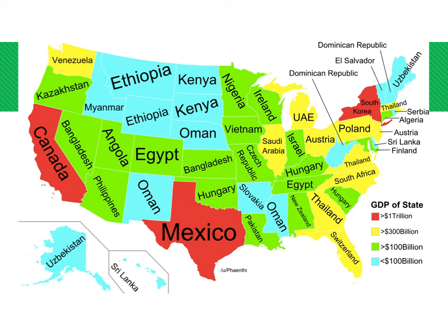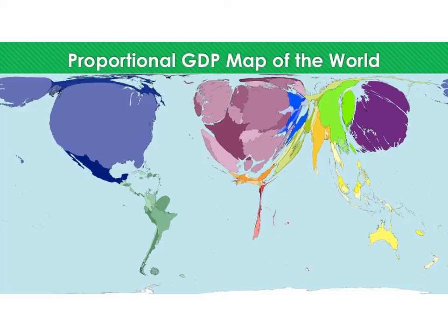Looking at a larger GDP comparison map, you can see that Nigeria and Minnesota have the same GDP. A proportional GDP map of the world shows that the United States has the largest GDP globally, with all other countries' GDPs proportionally smaller in comparison.